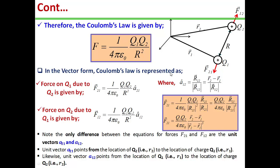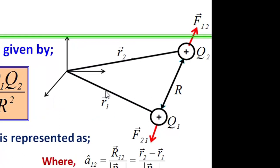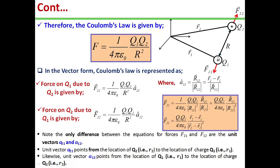Since force is a vector quantity, it has both magnitude and direction. In this figure, charge Q1 is located at distance R1 and charge Q2 at distance R2, with distance R between them. The force on Q1 due to Q2 is given by: vector F₂₁ = (1/4πε₀) · Q1·Q2/R² · â₂₁, where unit vector â₂₁ = R₂₁/|R₂₁| = (R1 − R2)/|R₂₁|.